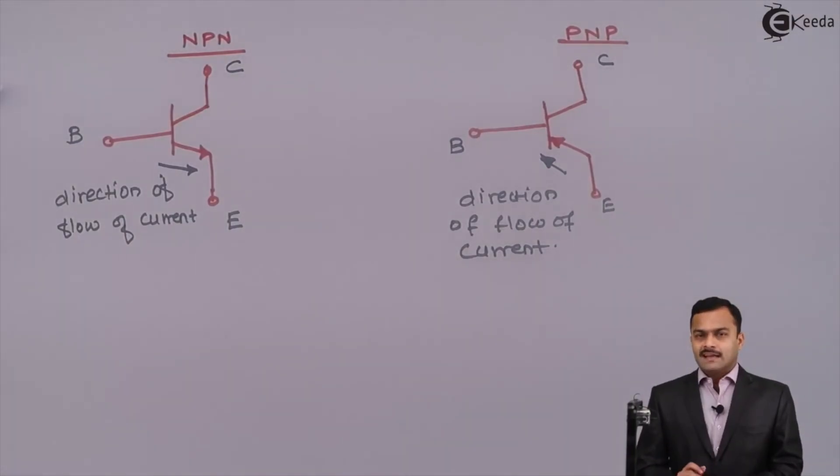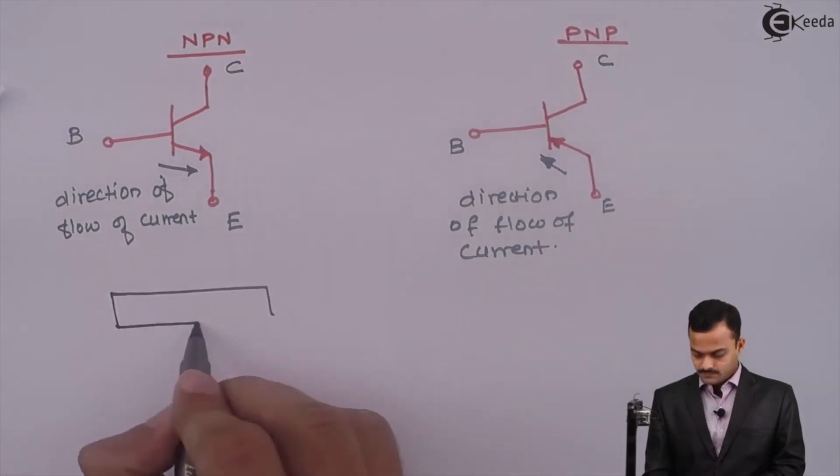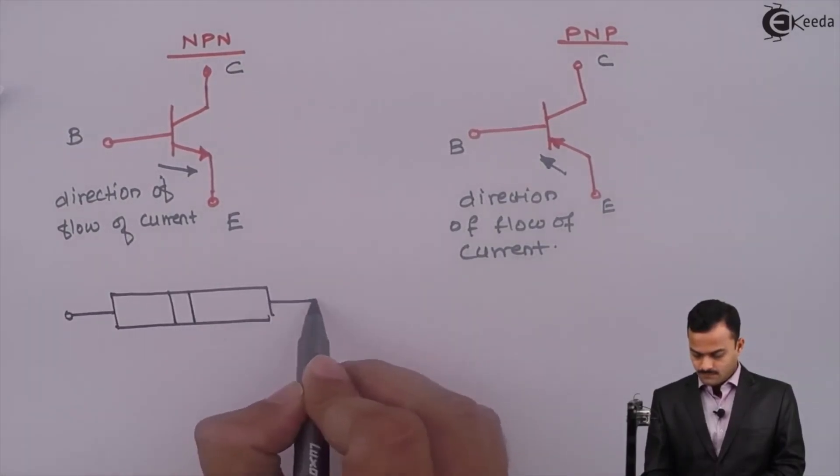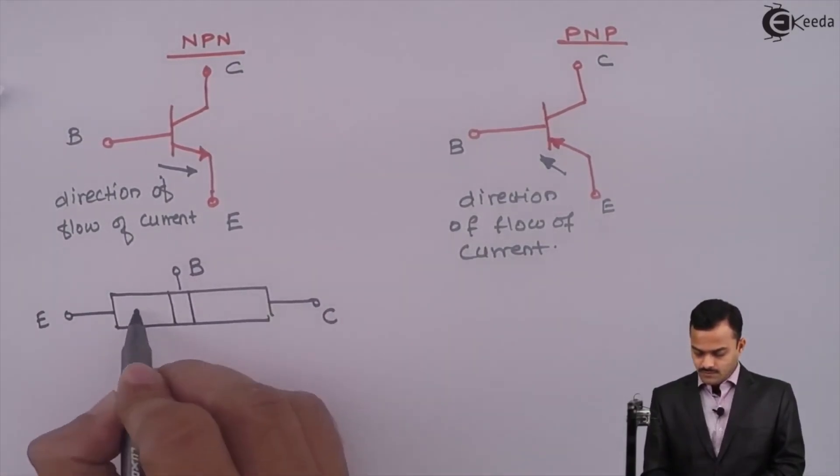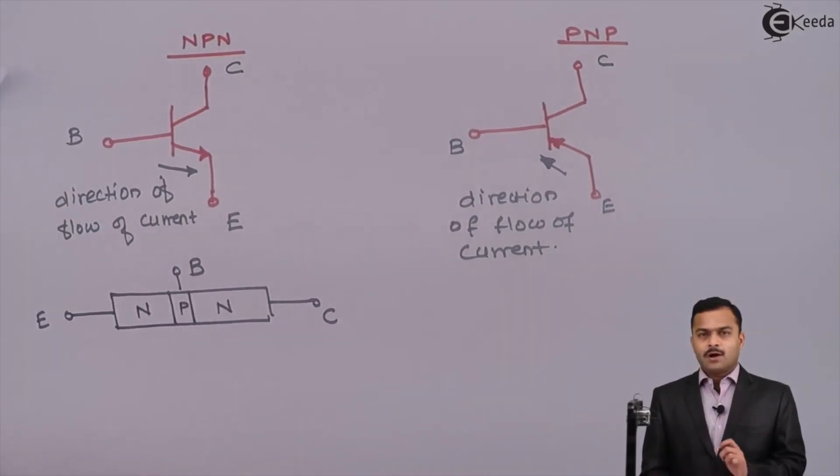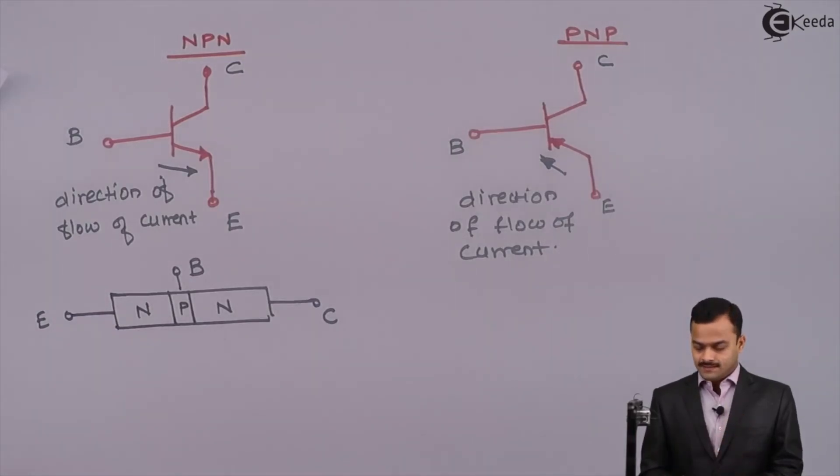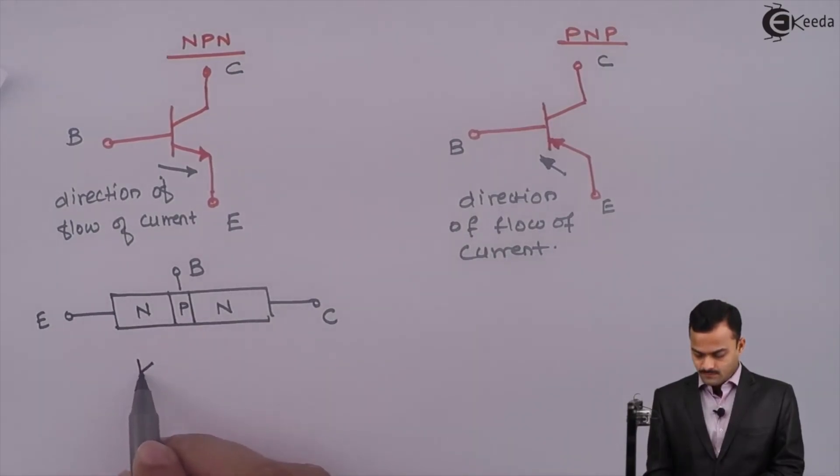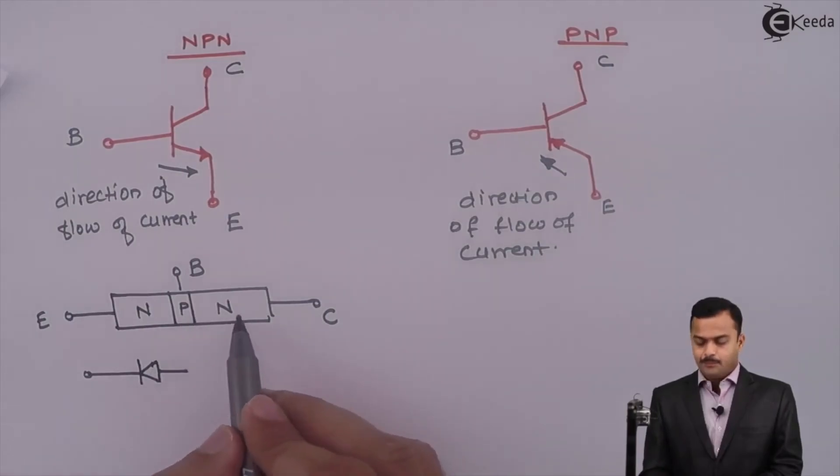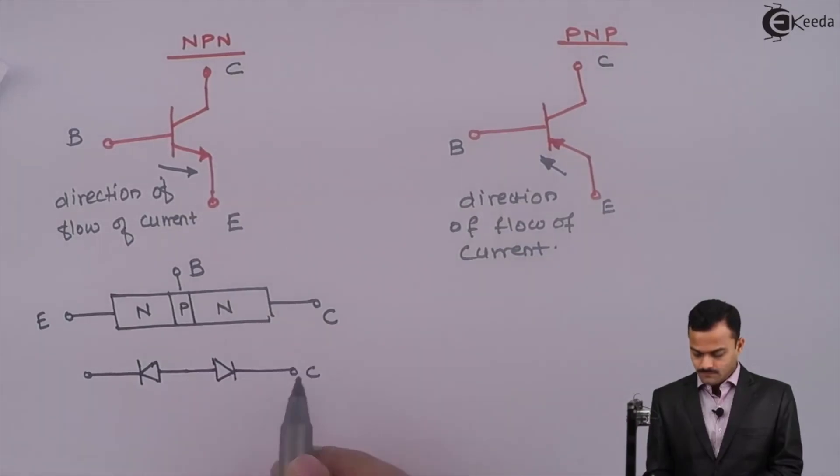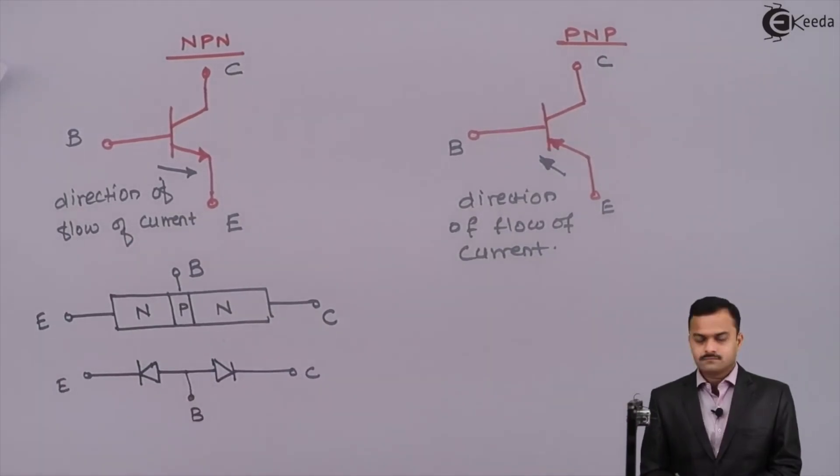If you see its layer structure once again, for NPN Transistor, if you see properly, it is like two diodes connected like this. See here, NP, the first diode. And second, PN. So two diodes back to back.